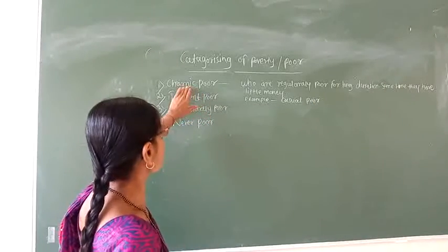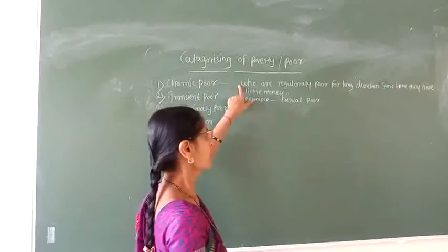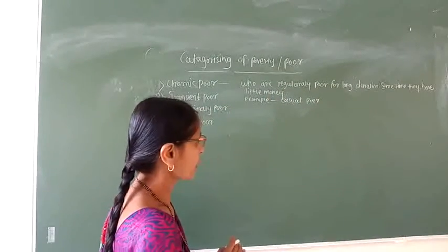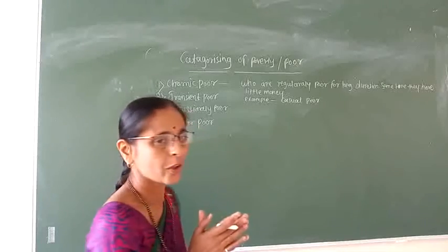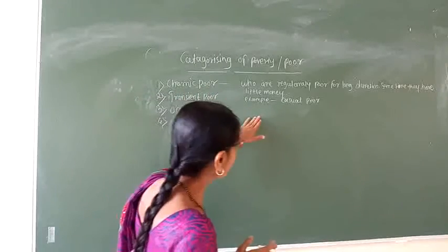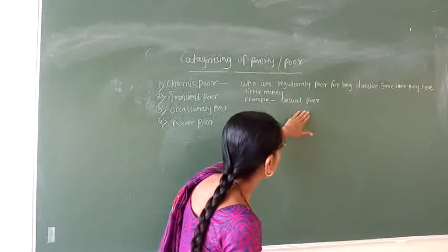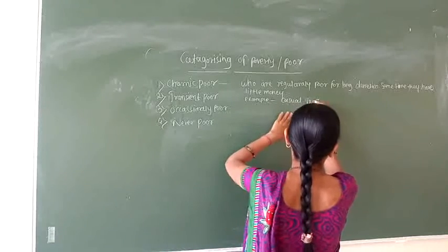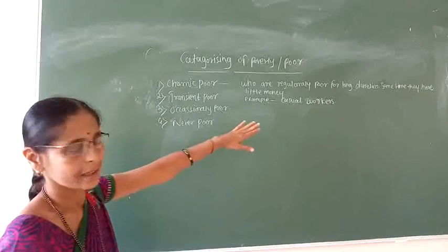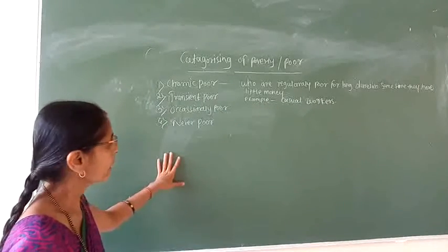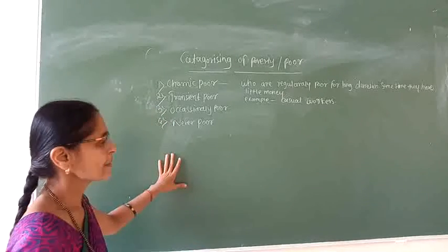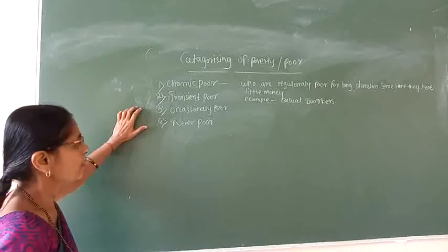The chronic poor means those persons who are regularly poor for a longer duration. Sometimes they have only eternal meaning. That person we call the chronic poor. For example, the casual workers — these workers or persons belong to the backward classes, and these persons we call the chronic poor.